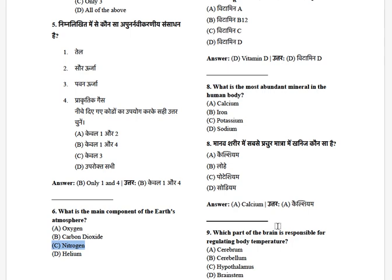What is the most abundant mineral in the human body? The options are: calcium, iron, potassium, and sodium. The answer is calcium.